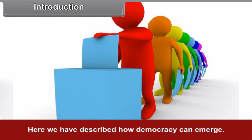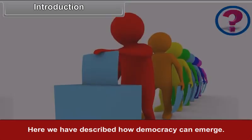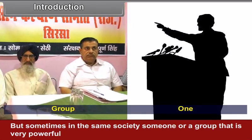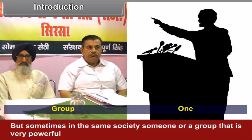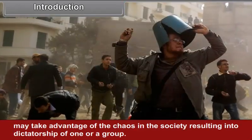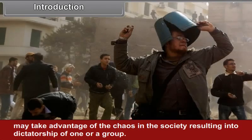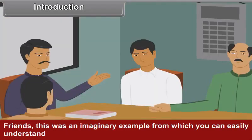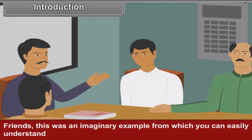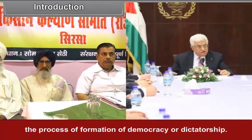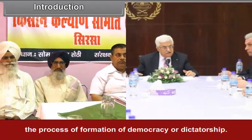Here we have described how democracy can emerge. But sometimes in the same society, someone or a group that is very powerful may take advantage of the chaos in the society, resulting in dictatorship of one person or a group. This was an imaginary example from which you can easily understand the process of formation of democracy or dictatorship.